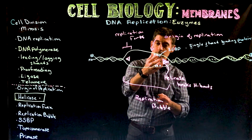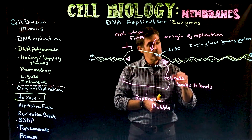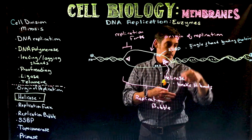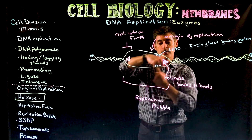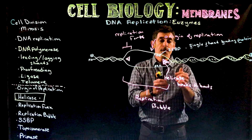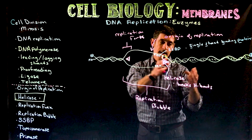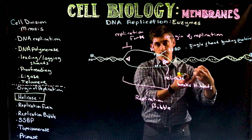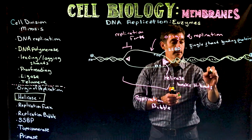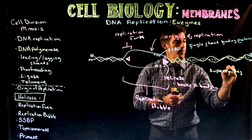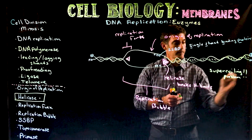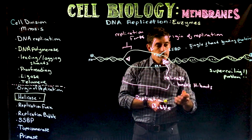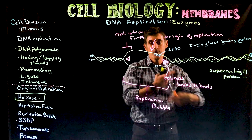Before we move to the next step at the replication fork, we have to address another problem. DNA is a helix — the two strands are wound around one another. As the two strands are being pulled apart, further upstream there will be additional pressure put on that coil, creating a problem called supercoiling. Supercoiling can cause the DNA to tangle around itself and knot up.